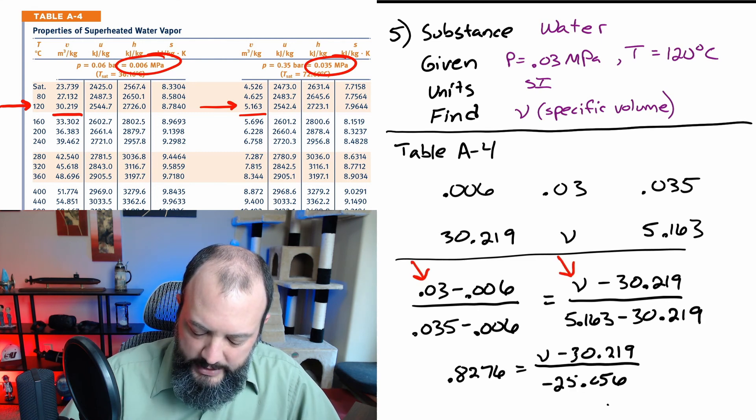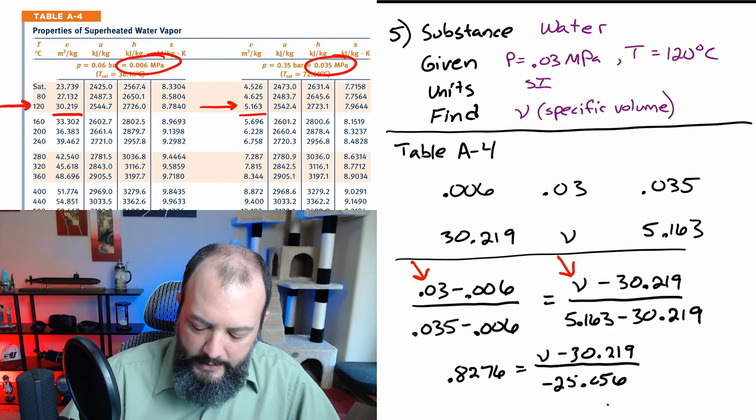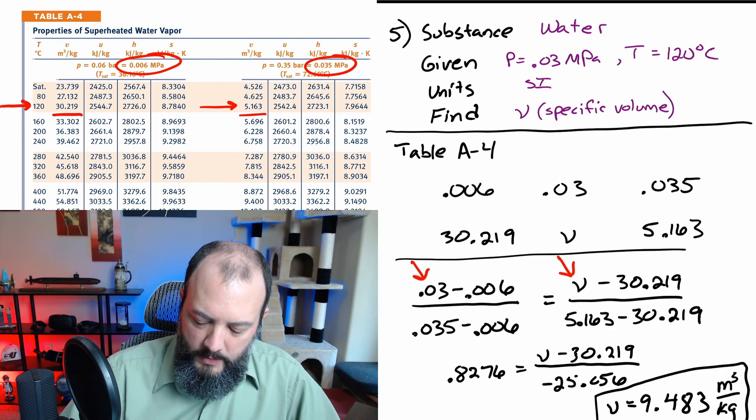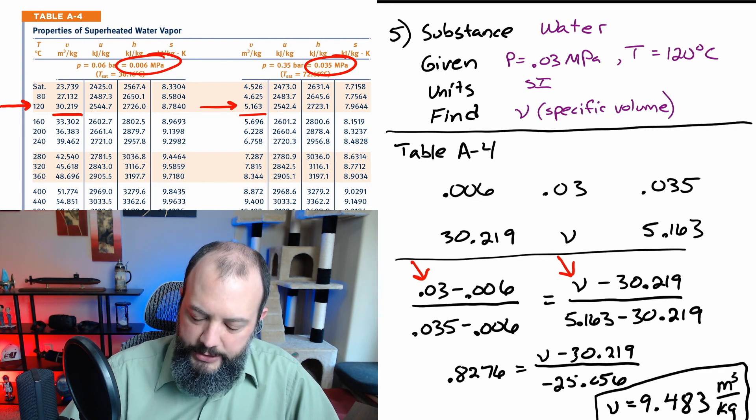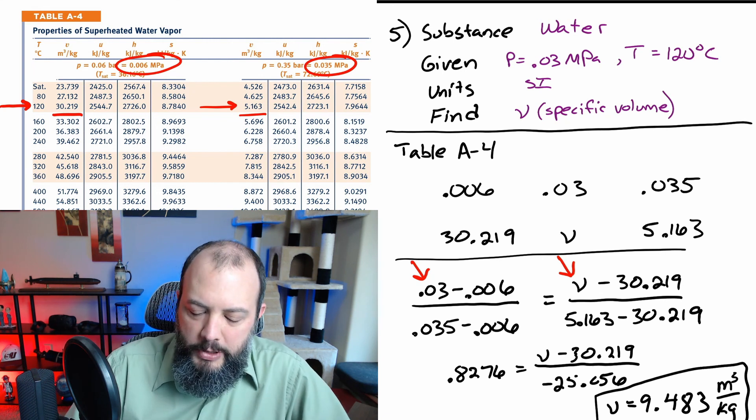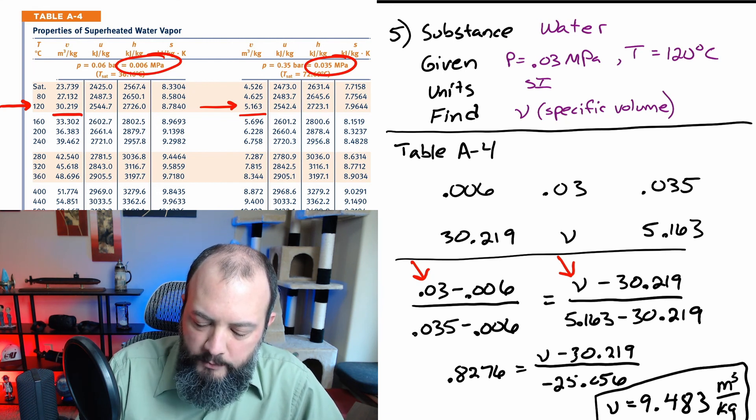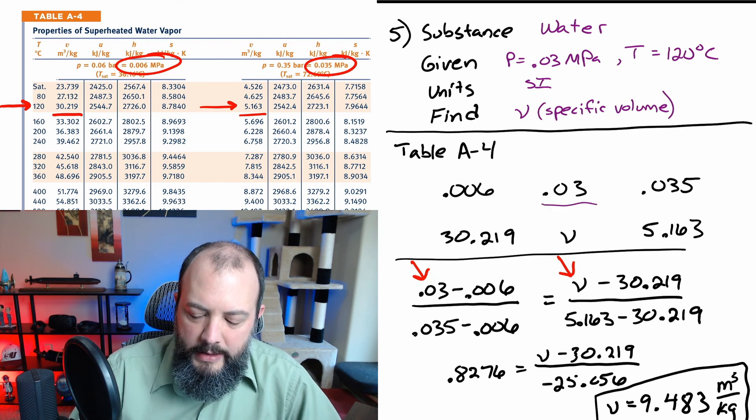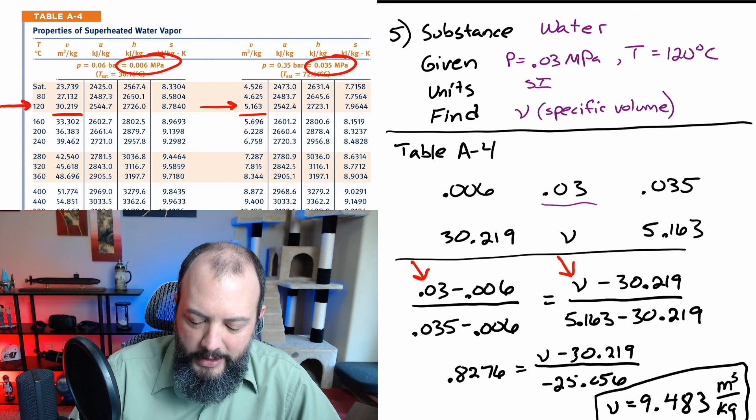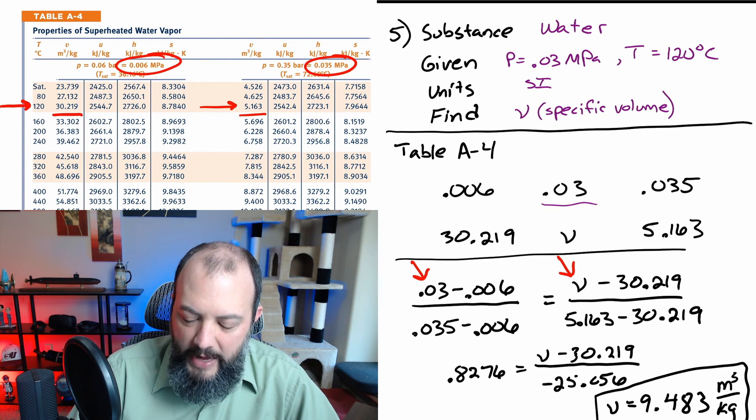And so now we want to check whether this number actually seems to make sense. When we look at the value that we were given for pressure, 0.03 MPa, that's much closer to the 0.035 than to 0.006. So our specific volume of 9.4 should be much closer to 5.16 than to 30, which it is.